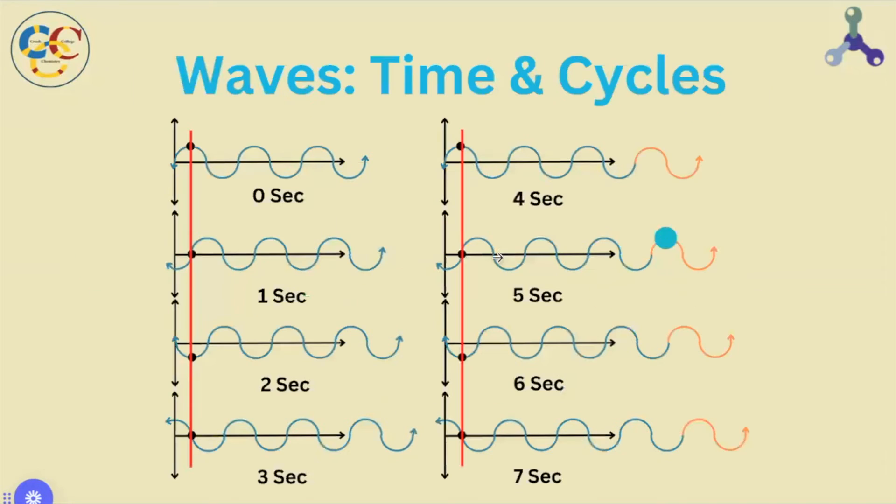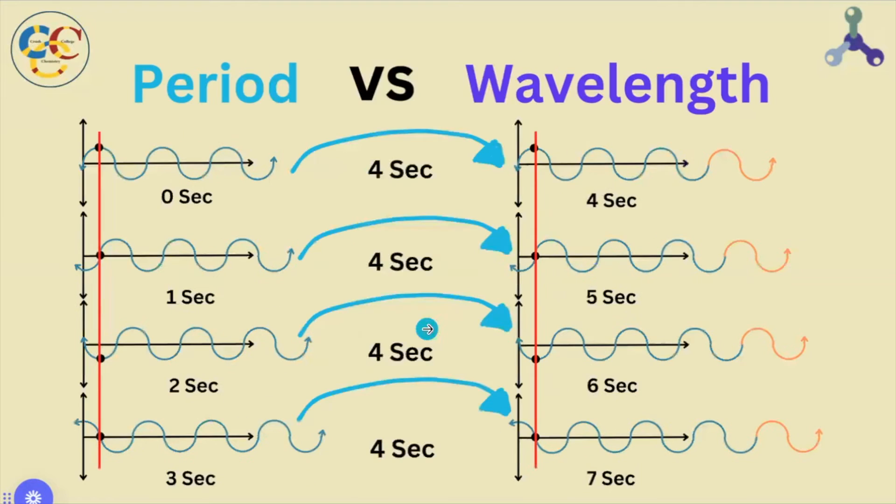We can take any one of these snapshots in the left column and map out a full period later. We can see that it takes exactly four seconds every time to complete a full cycle.